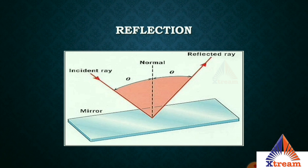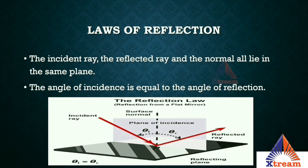In the figure, there is an incident ray, a normal, and a reflected ray. The incident ray hits the mirror and is reflected back as the reflected ray. The angle between the incident ray and the normal is called the angle of incidence, and the angle between the normal and the reflected ray is called the angle of reflection.